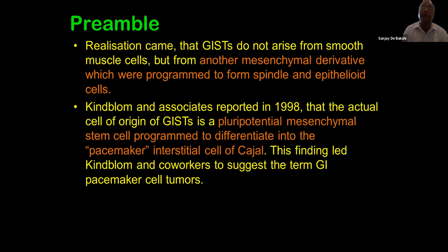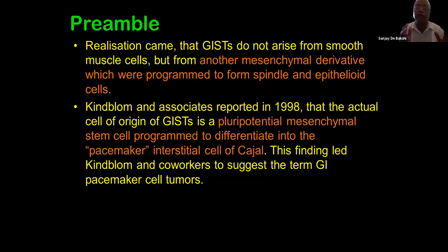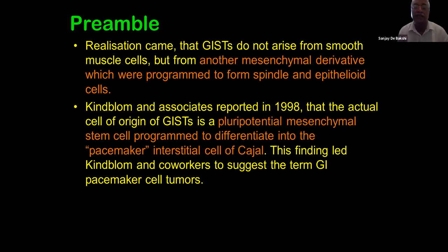The realization came that GISTs do not arise from smooth muscle cells but from another mesenchymal derivative programmed to form spindle and epithelioid cells. Around 1998, Hirota, Isozaki, and associates reported that the actual cells of GIST are a pluripotential mesenchymal stem cell programmed to differentiate into the pacemaker interstitial cells of Cajal. This finding led Kindblom and coworkers to suggest the name 'GI pacemaker cell tumors.'